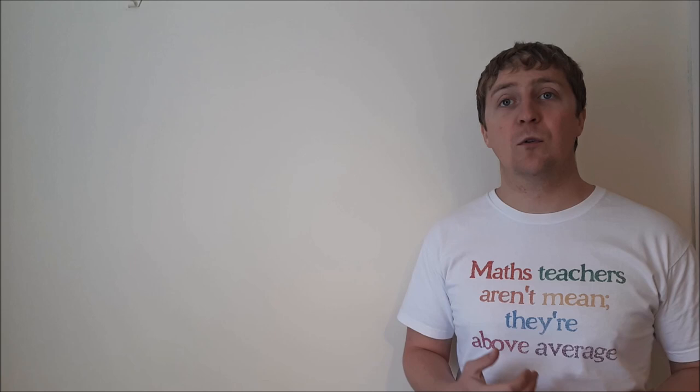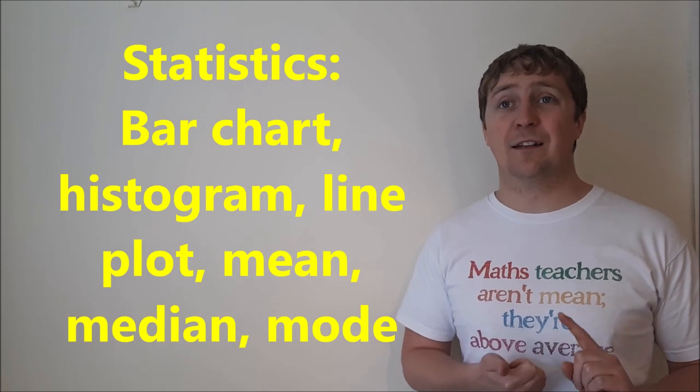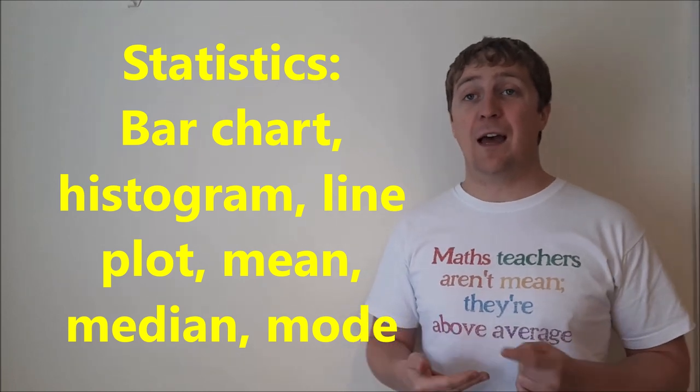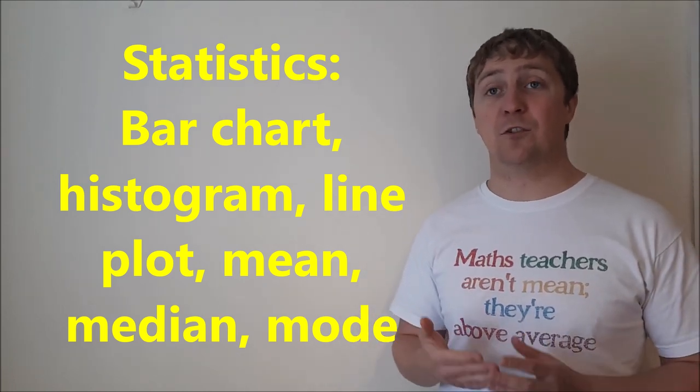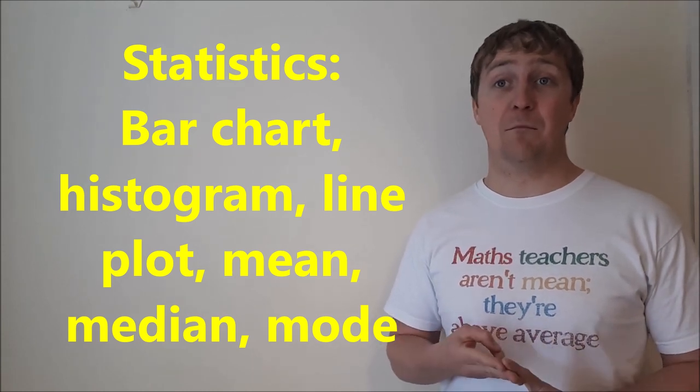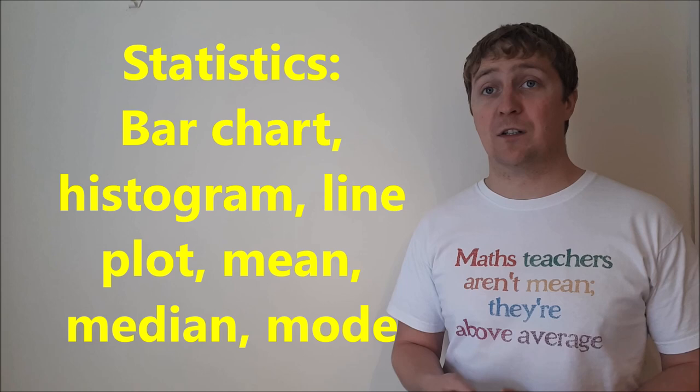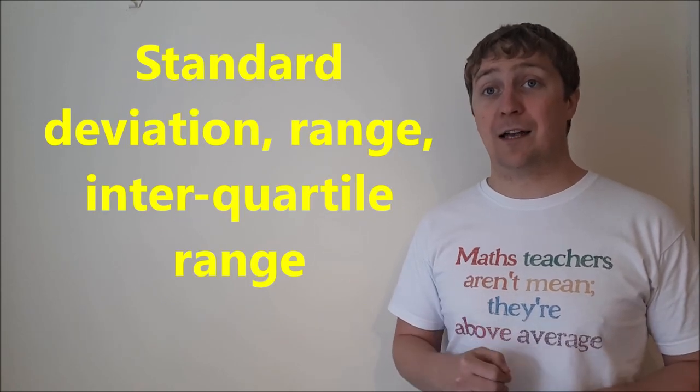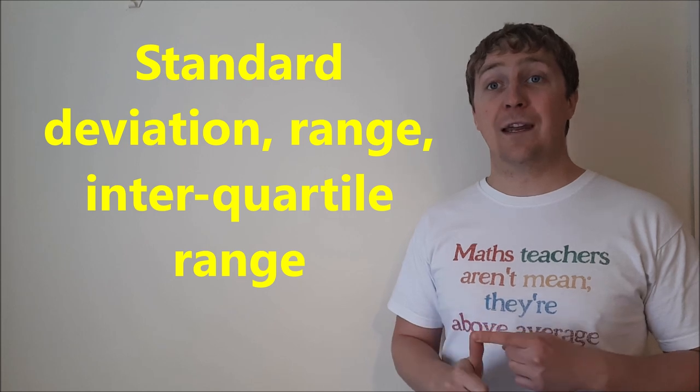...that's on Paper 2 is statistics. So here you're looking at things like being able to draw bar charts, histograms, line plots, any type of diagram to show information. You have to know your mean, median, and mode, which you should know from your Junior Cert, your standard deviation—remember how to do that on your calculator—your range and your interquartile range as well.